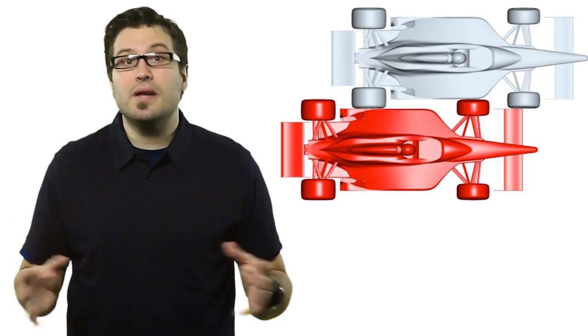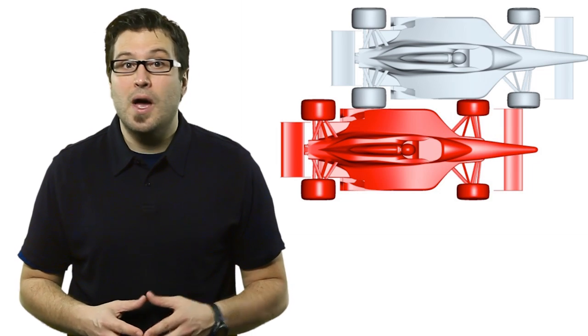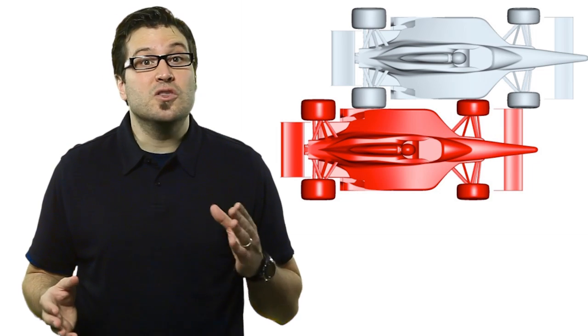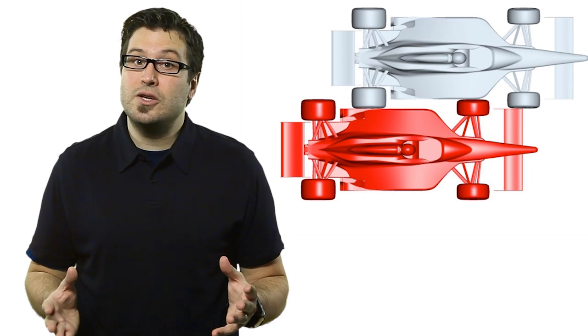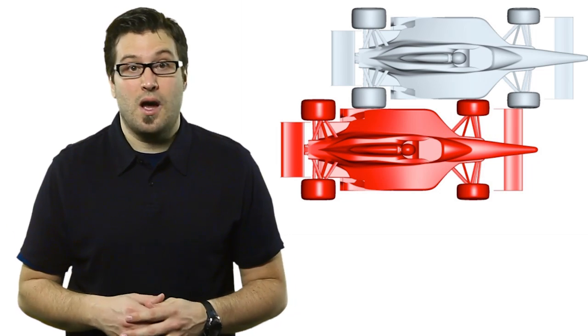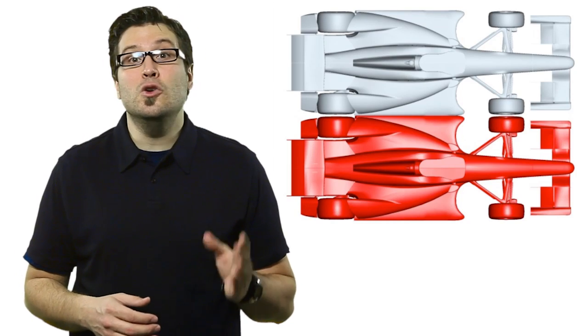Luca told us that because the cars are an open wheel design, a potential source of a crash is the wheel of one car coming into contact with another car right beside it. A situation known as wheel interlock. So, Dallara designed a new body, increasing the width of the cars by 25 millimeters to increase the chances that the bodies of the cars come in contact as opposed to one of the wheels.